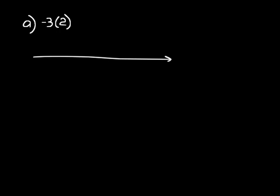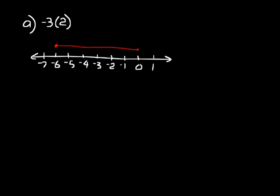In practice problem A, represent negative three times two using a number line. Make a number line that at least has negative six on it. You can think of it two ways: do three times two and find the opposite, or do negative three twice. Starting at zero, add negative three twice — negative one, two, three, and then negative one, two, three again — and you end up at negative six.